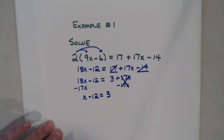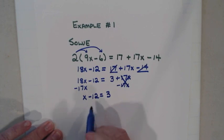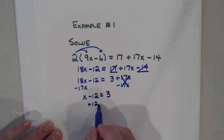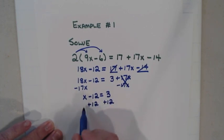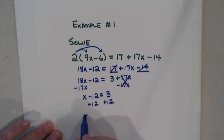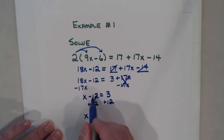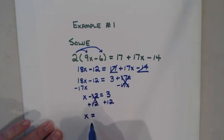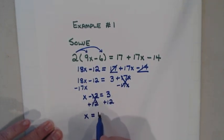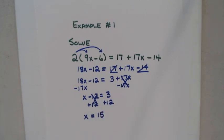Now I need to add or subtract. The opposite of negative 12 is positive 12, so I add 12 to both sides. Bring down x, bring down the equal sign. 3 plus 12 is 15. So x equals 15. I didn't have to use any multiplying or dividing in this problem.